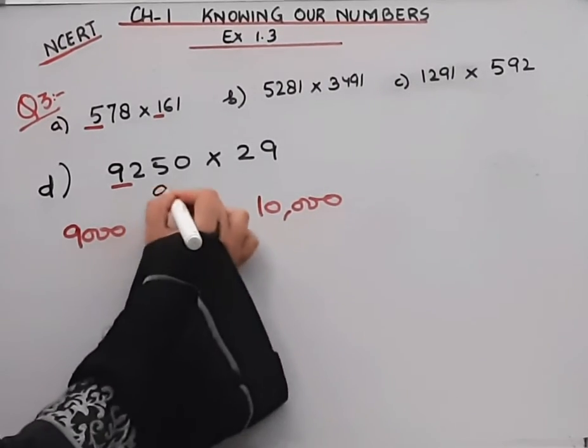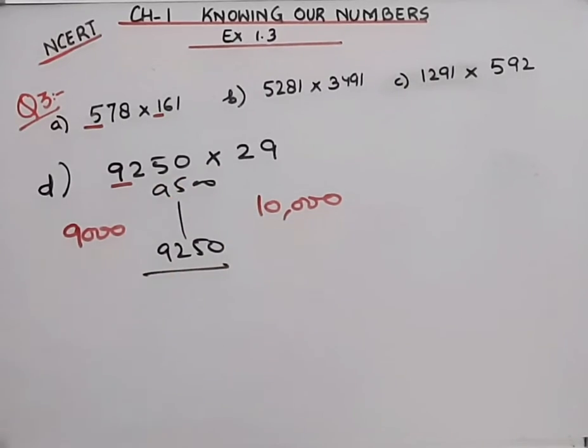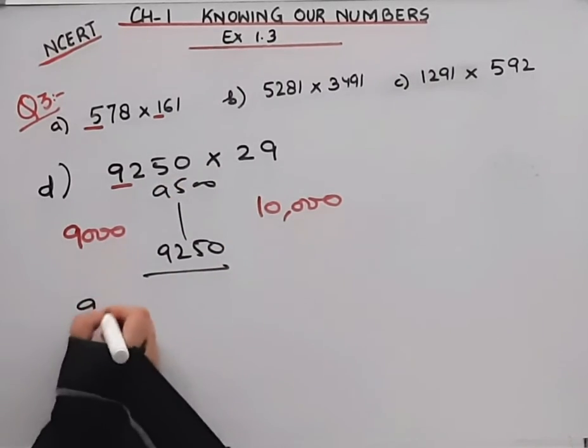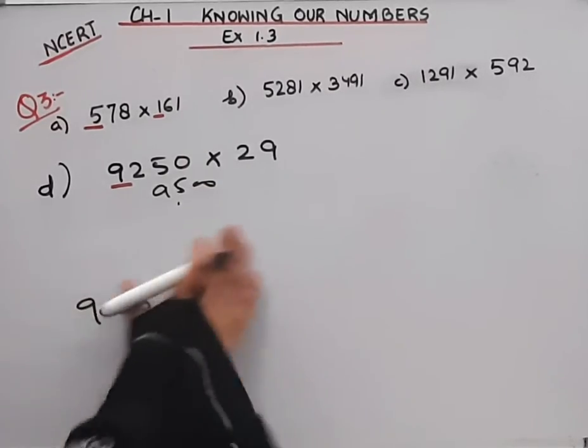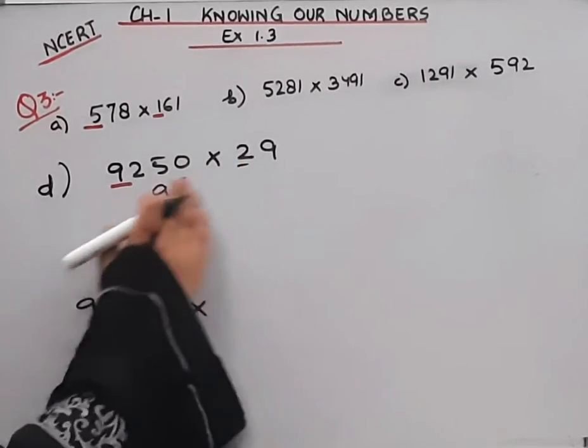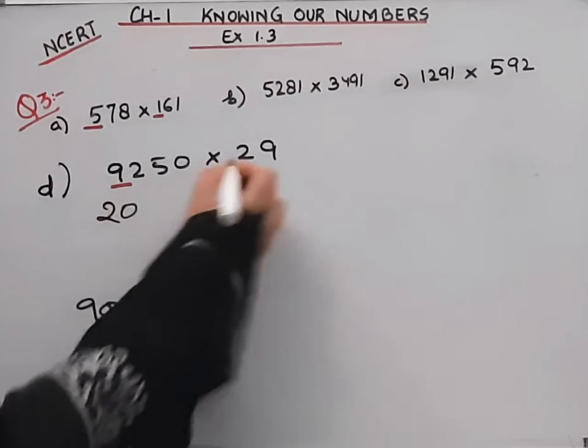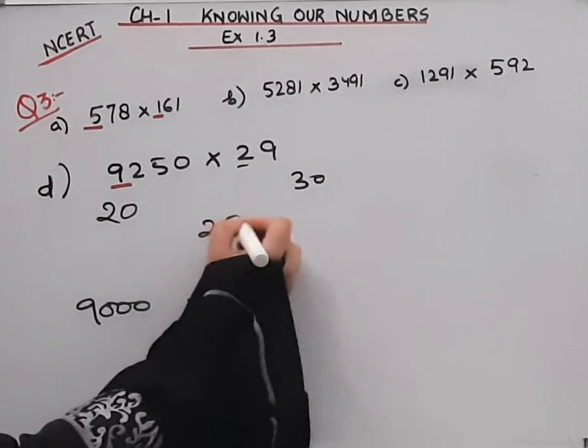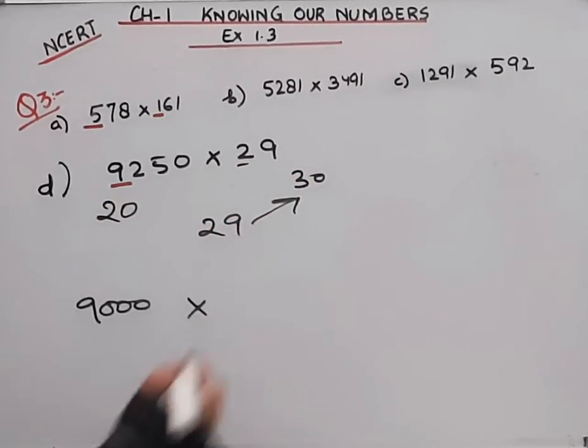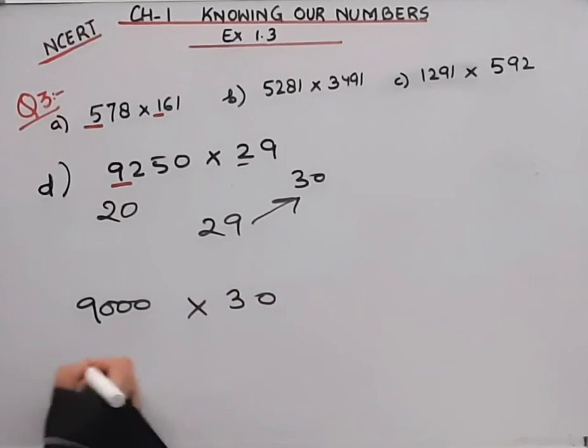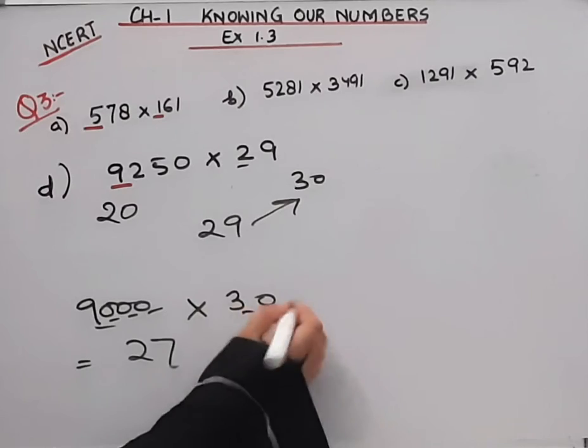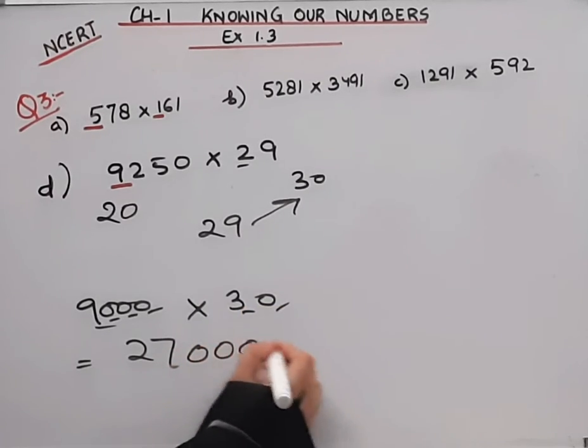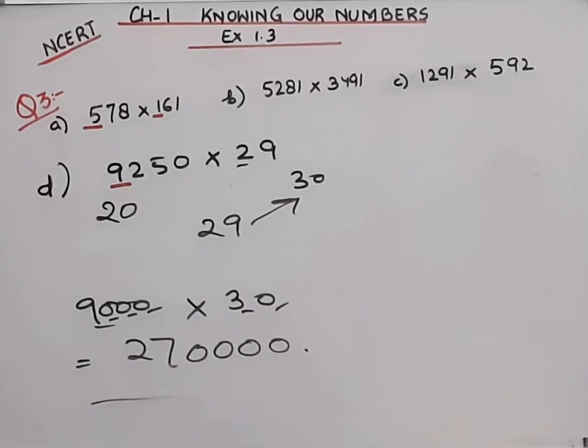9250 is close to 9000. 29 is close to 30. 9000 times 30 is 270,000. This will be the answer for the D part.